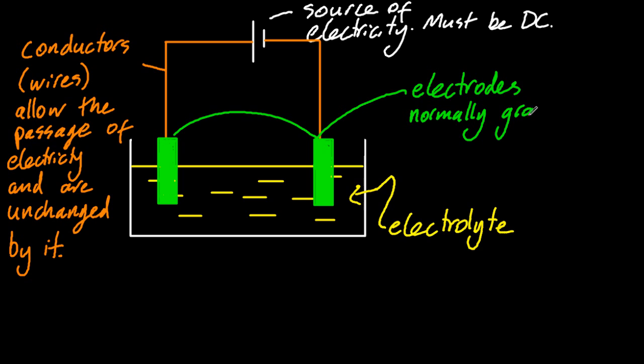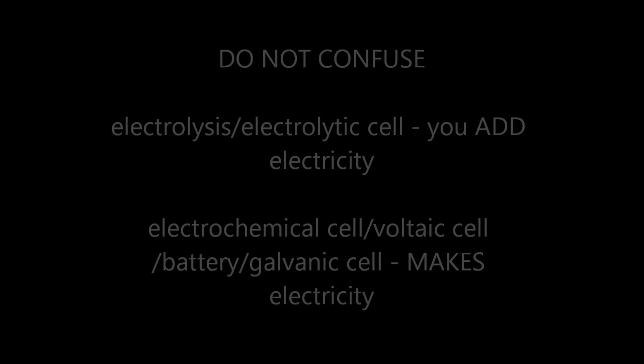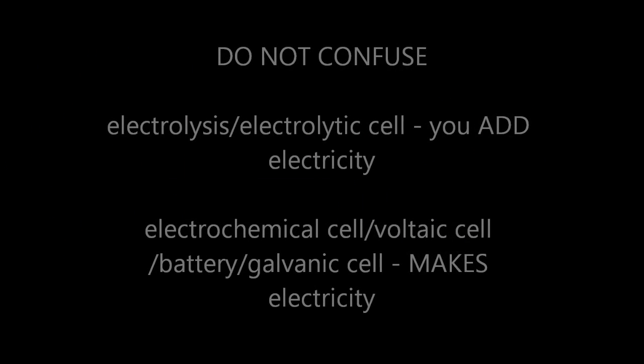So electrolysis means breaking by electricity. Lysis means to break or to separate, and electro, that's electricity. Another form of electrolysis, using different equipment: you put electricity into hair follicles, and that produces sodium hydroxide, which then kills the hair follicle, and the hair won't grow back.